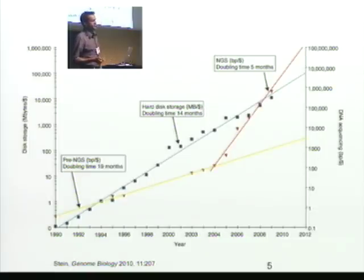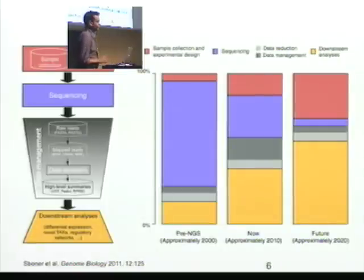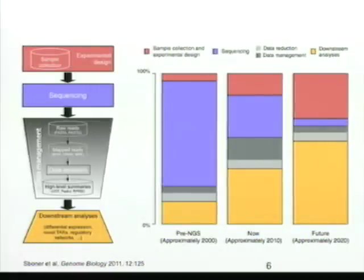What we can see is that the amount of data being generated in biology is dramatically higher than what Moore's Law or hard discs can possibly keep up with. Aside from the amount of data, it's also important to understand what the analysis techniques and other costs are associated with in this field.